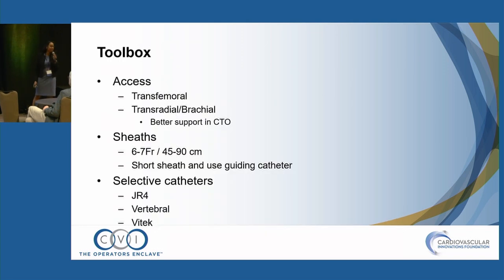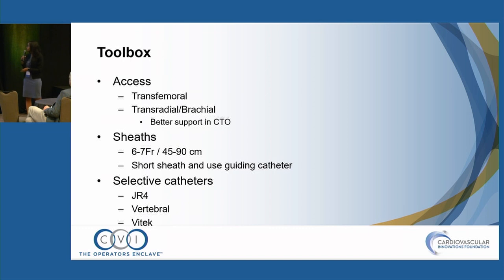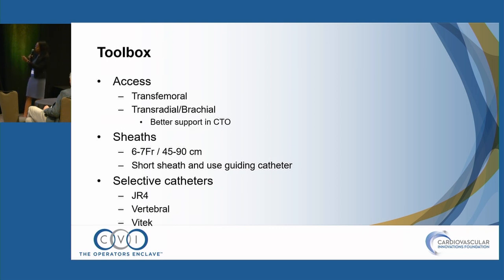Before going to the case, let me address the toolbox for subclavian interventions. For access: transfemoral — some preference depending on what you want to do; transradial — limitations on sheath size; brachial — vascular surgery colleagues tend to use a cut-down approach for better control. From an arm approach you get better support, especially for a subclavian CTO. Sheaths from 6 to 8 French, 45 to 90cm — 45cm if coming from the arm, longer if going from femoral. Selective catheters: JR4 from femoral, or a subvertebral catheter or VTEC. Also very important: consider embolic protection, especially for innominate interventions where you can place the filter in the common carotid. On the left it becomes less important, but you can also place a filter in the vertebral or brachial if there's a thrombotic occlusion.